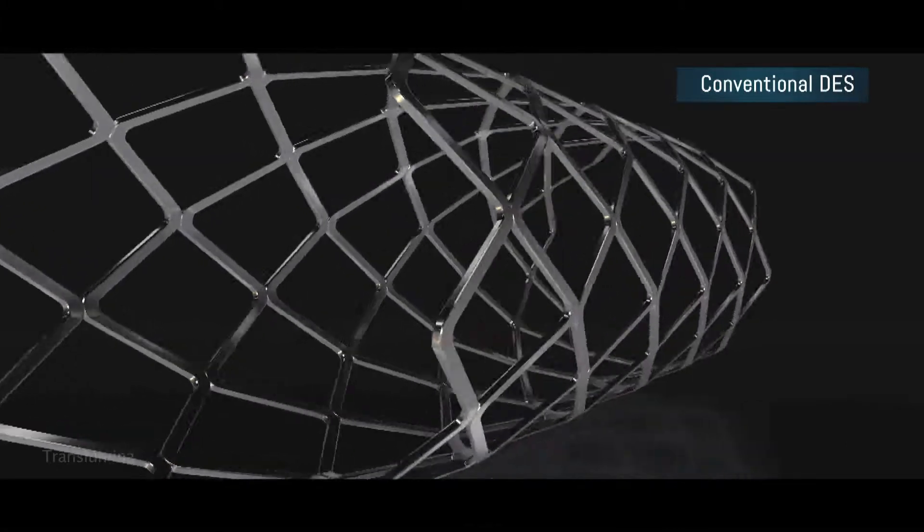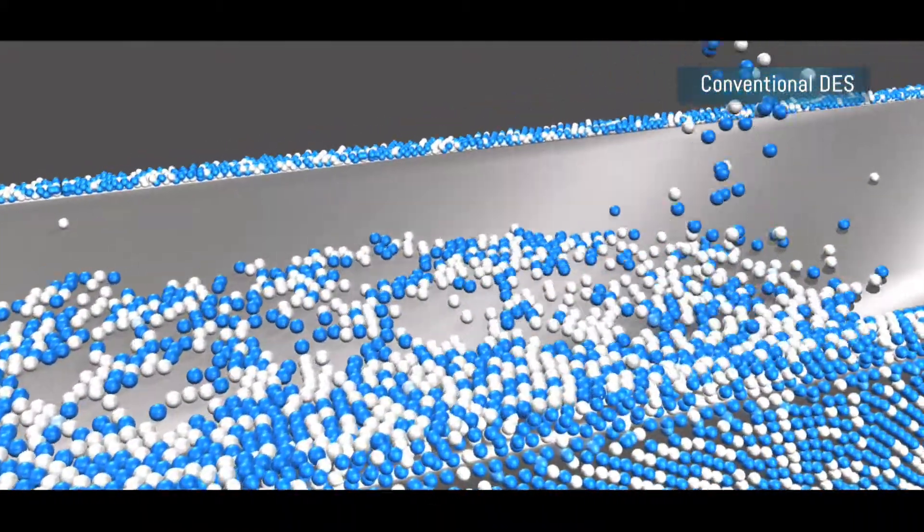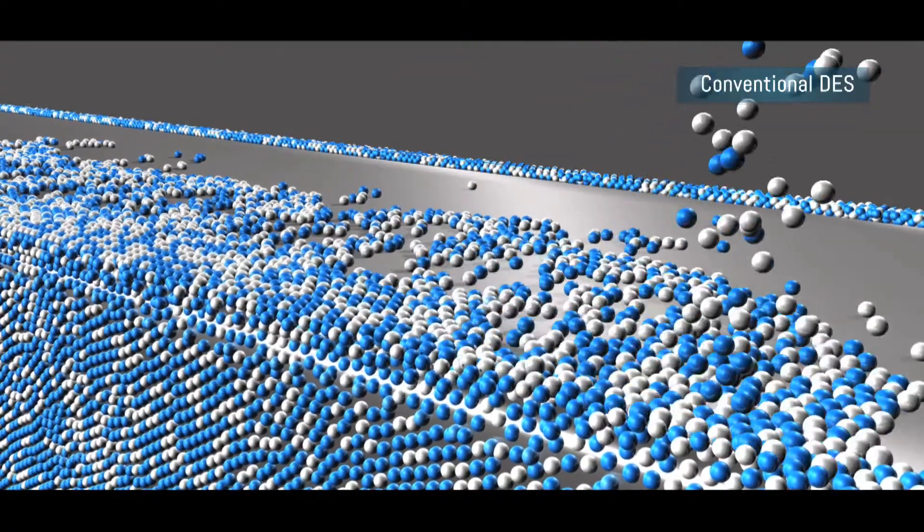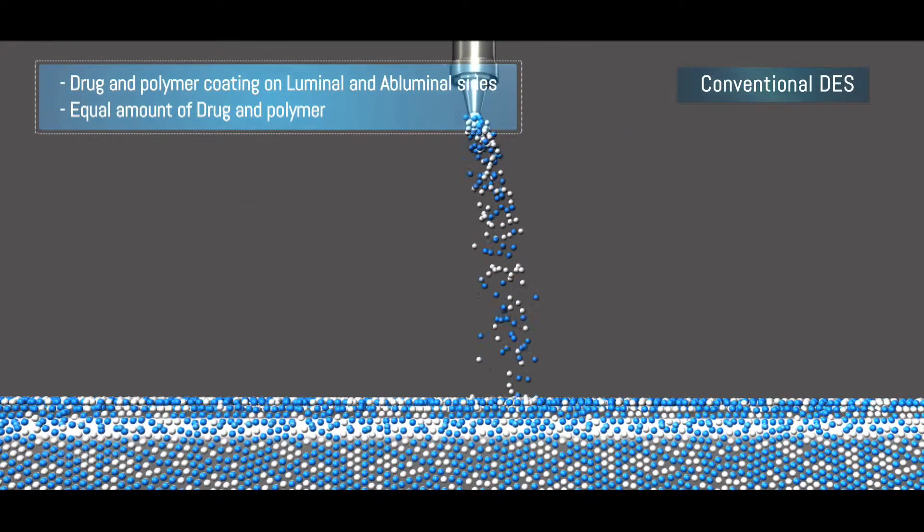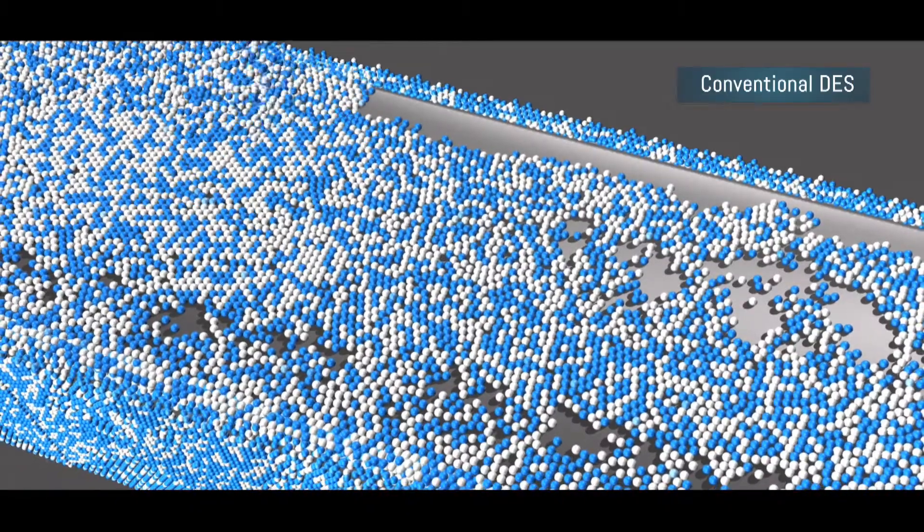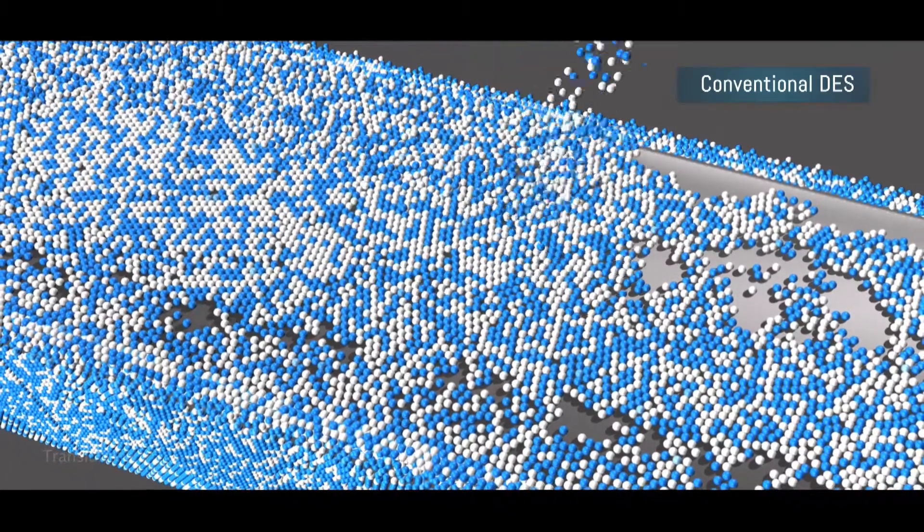Conventionally, stents are coated with the drug and the polymer matrix that is spread over the stent struts on abluminal and luminal sides as an aerosol forming multiple layers. This technology uses equal amounts of the drug and polymer.